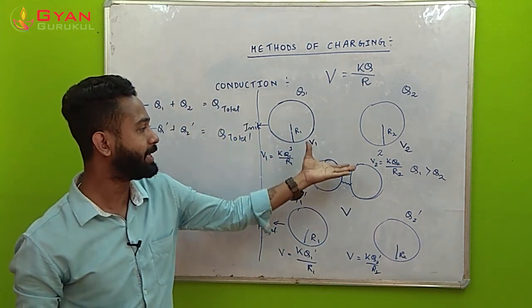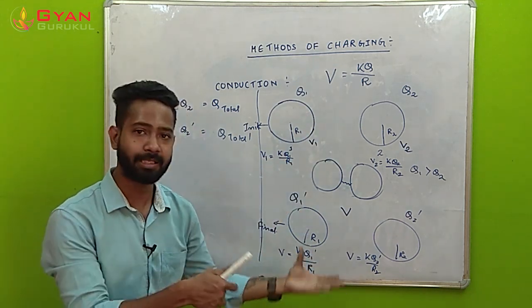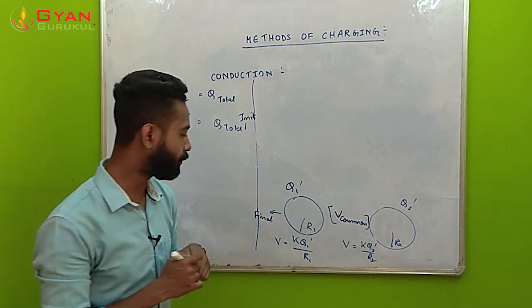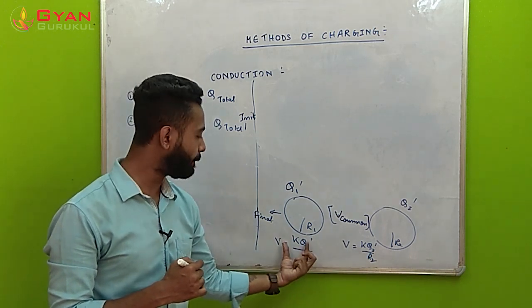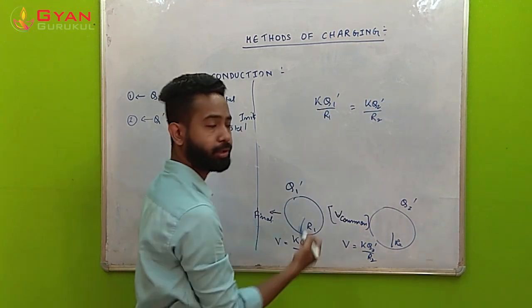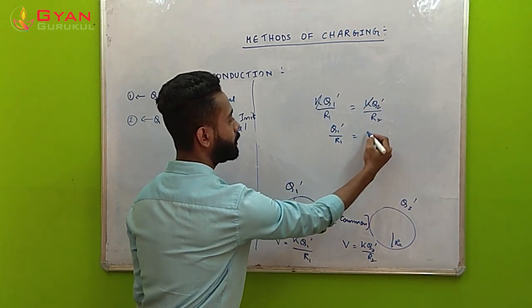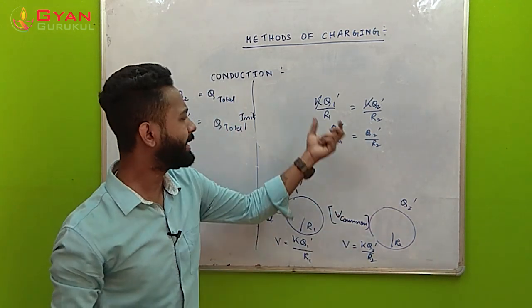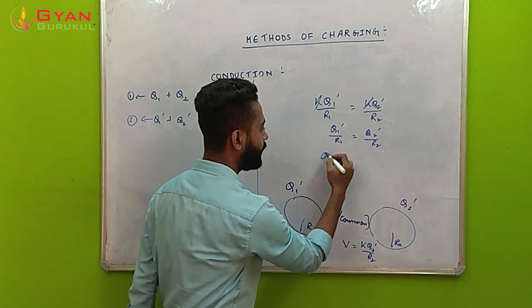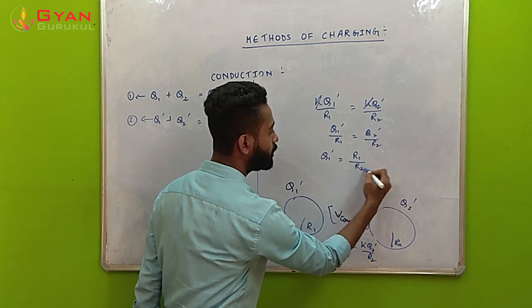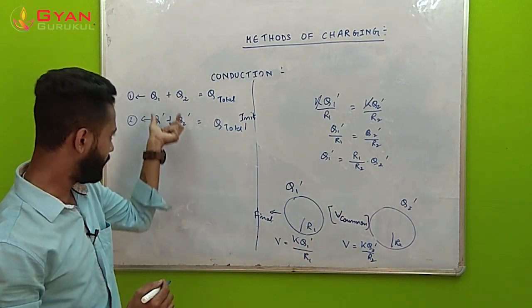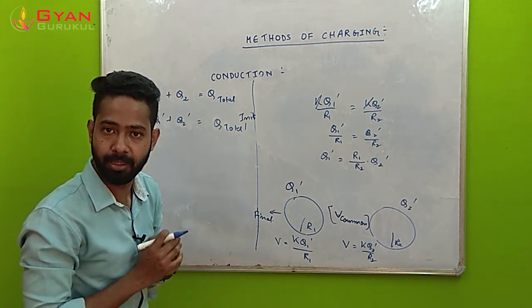Since the final potentials are equal, we compare them: kQ1'/R1 = kQ2'/R2. Cancelling k gives Q1'/R1 = Q2'/R2. From this, Q1' = (R1/R2) × Q2'. Substituting this value of Q1' into equation 2 and equating with equation 1, we set Q1 + Q2 equal to Q1' + Q2'. Substituting Q1' gives Q1 + Q2 = (R1/R2)×Q2' + Q2'.